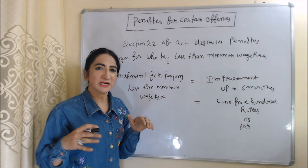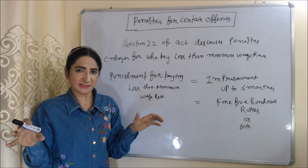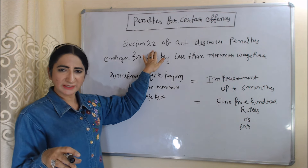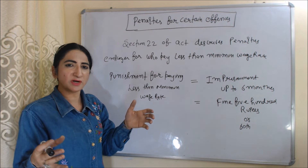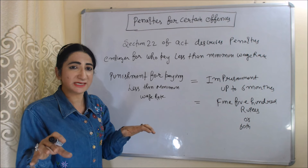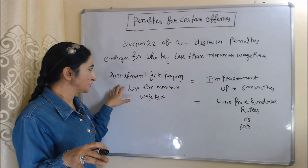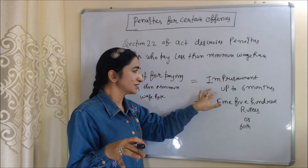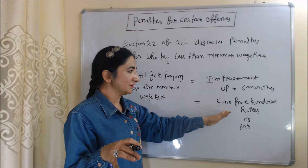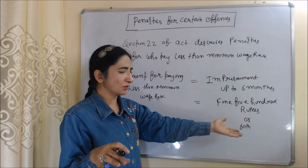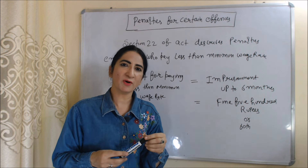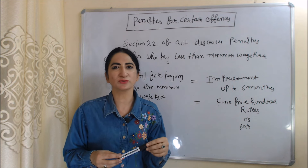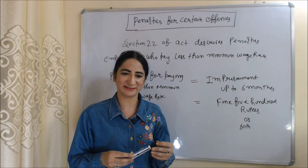Now we will see penalties under this act. Section 22 describes penalties for employers who pay less than the minimum wage. The punishment for paying less than the minimum wage rate is imprisonment of up to six months, a fine of 500 rupees, or both. This concludes the Minimum Wages Act — thank you so much for watching this video.